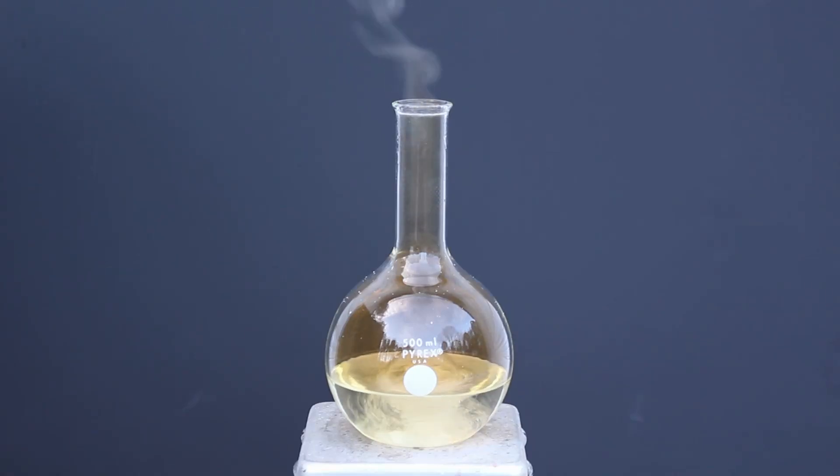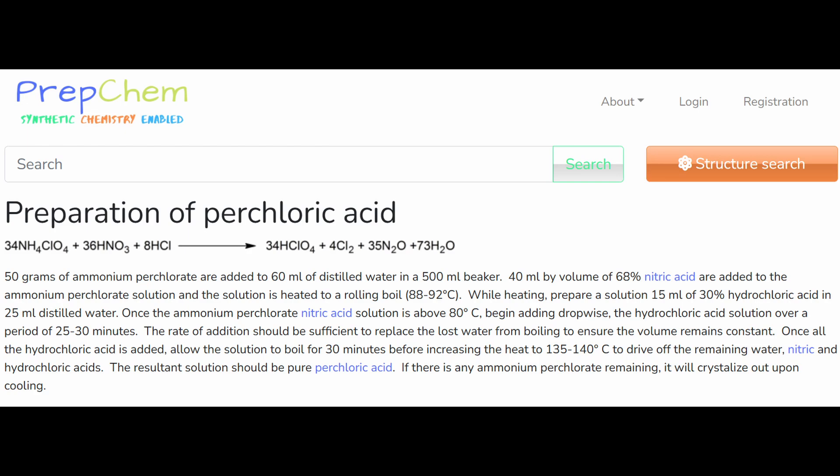Hi everyone. Today we're going to be making perchloric acid, which is a strong acid that is even stronger than sulfuric acid and also a powerful oxidizer. The procedure I'm going to use comes from the site PrepChem, and it's actually a pretty interesting reaction, so let's go over it.